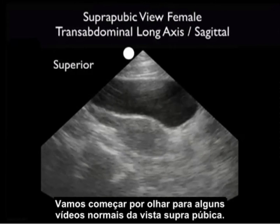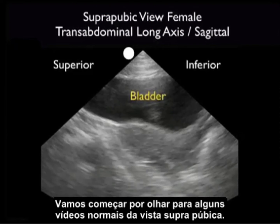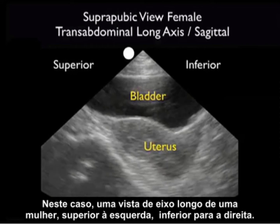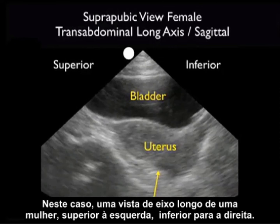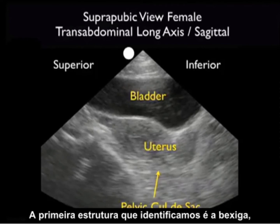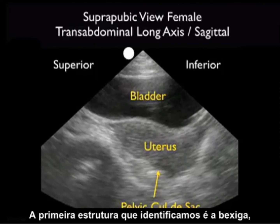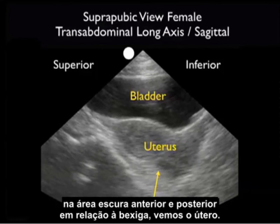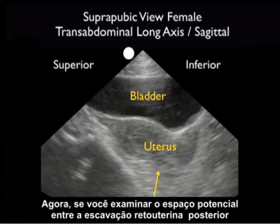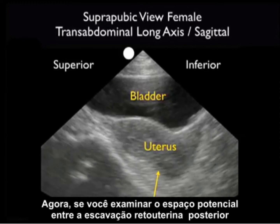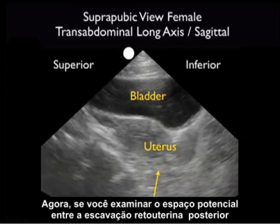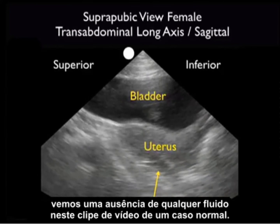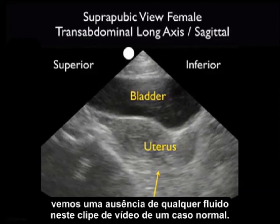Let's begin by looking at some normal video from the suprapubic view — in this case a long axis view in a female, with superior to the left and inferior to the right. The first structure we identify is the bladder, the dark area anteriorly, and posterior to the bladder we see the uterus. Now if we look into the potential space — the pelvic cul-de-sac posterior to the uterus — for any dark fluid collections, we see an absence of any fluid on this normal video clip.